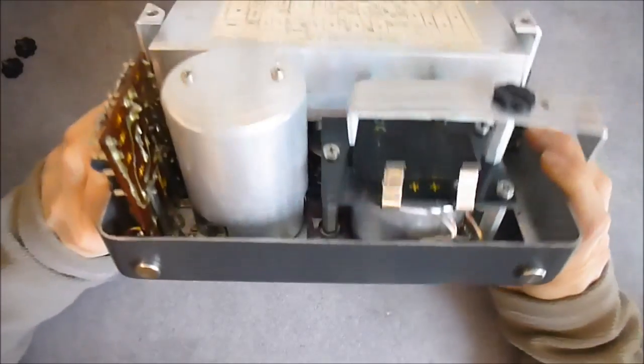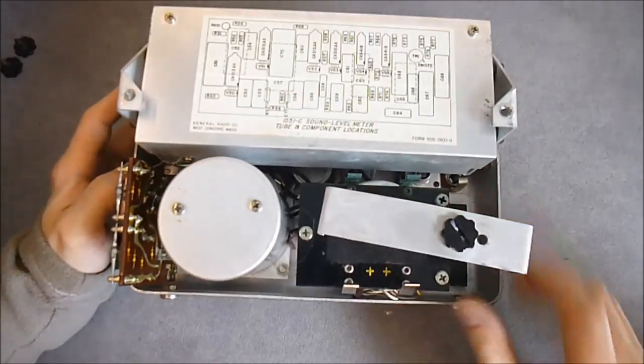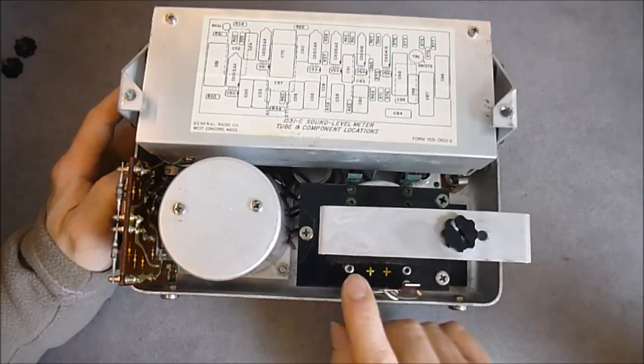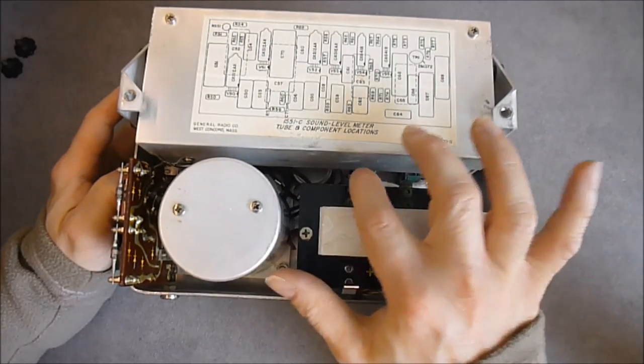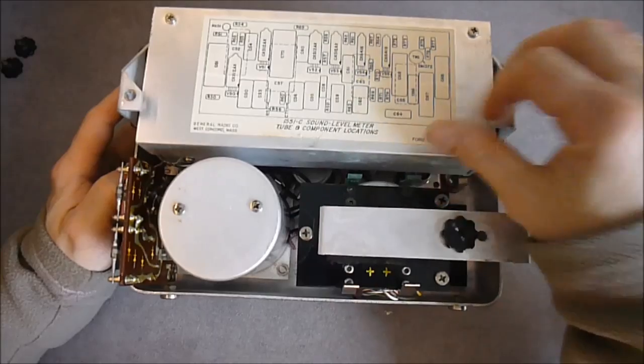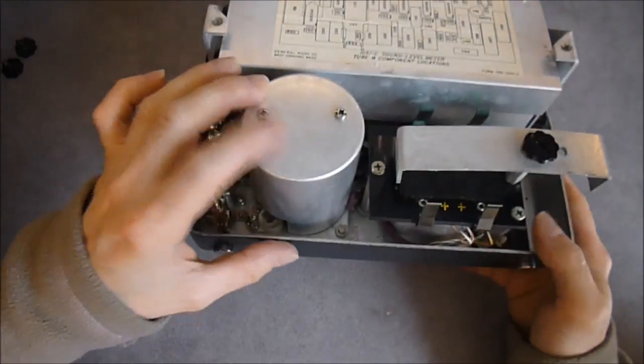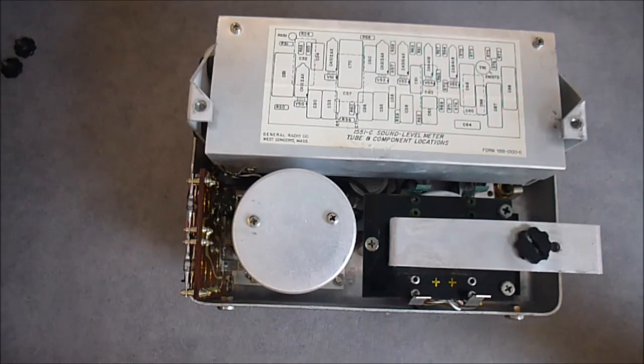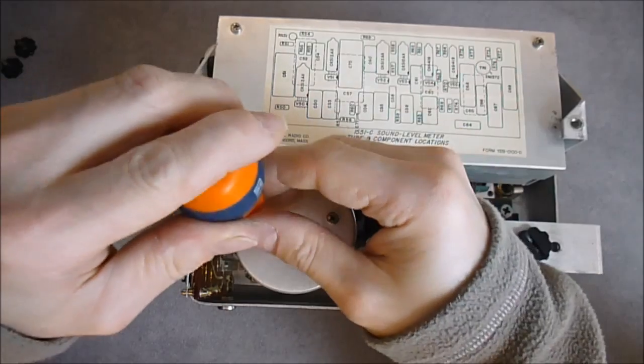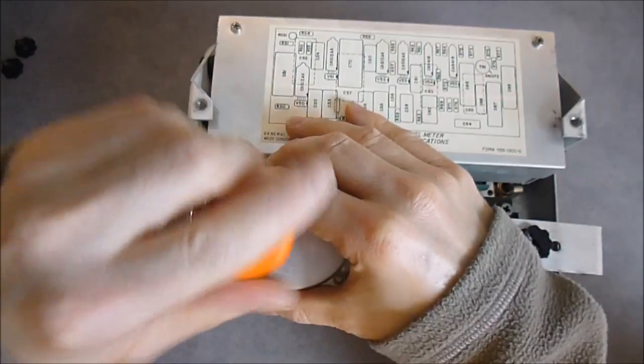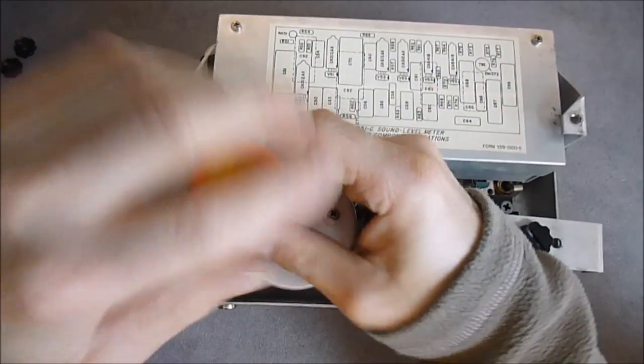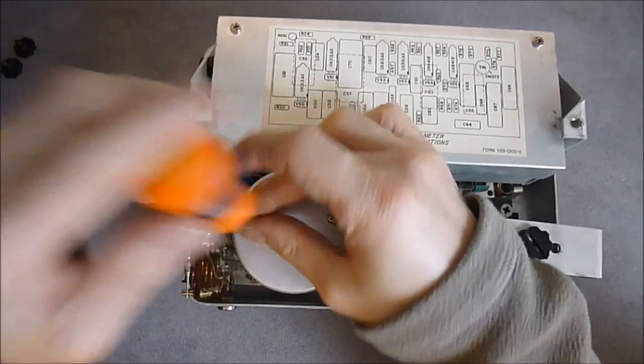So here apart from this, you have here a holder for two D cells with quite a bit of rust on this side. Here we have a can for the rotary switch. Let me remove this. I need to find the screwdriver.